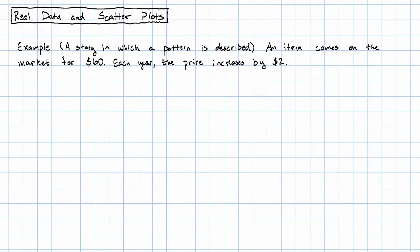This naturally gives us the equation: the price equals the rate of change, the slope, times the number of years the item spent on the market, plus the starting value. When the pattern is described, it's very easy to write down an equation relating the two quantities.